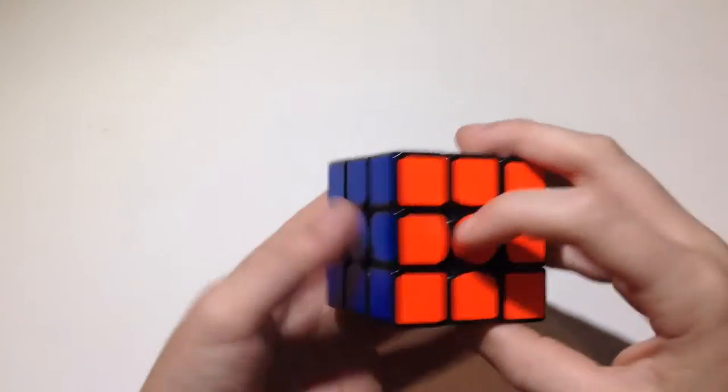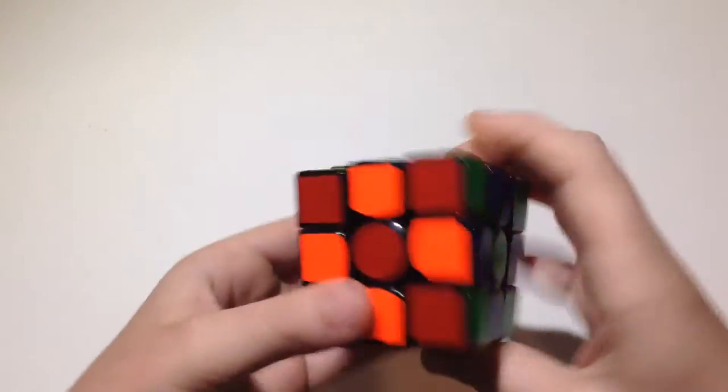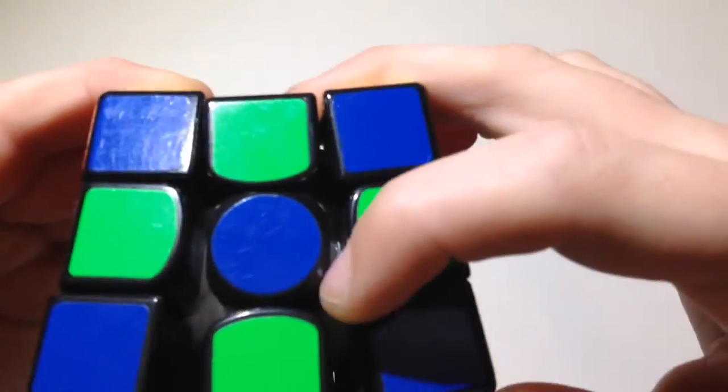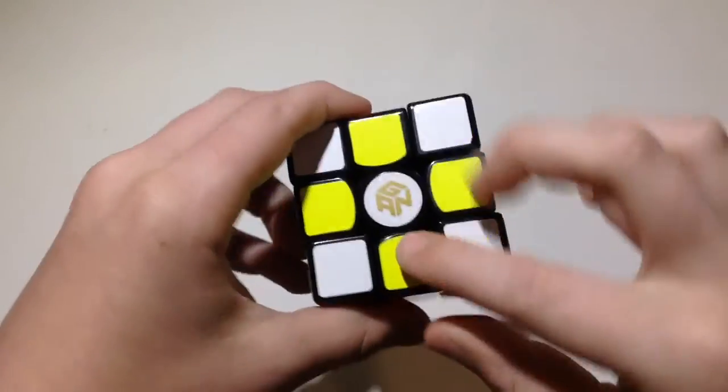The shades on this cube are the Gans half-bright shades and are pretty high quality. I've had minimal chips. As you can see, there's barely any chips, and it comes with a golden Gans logo.